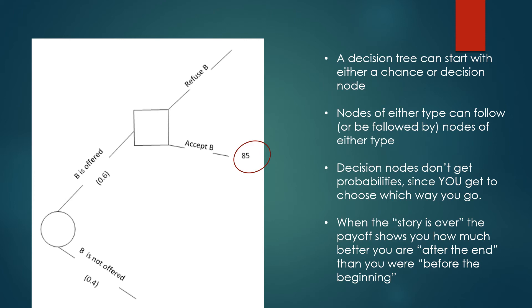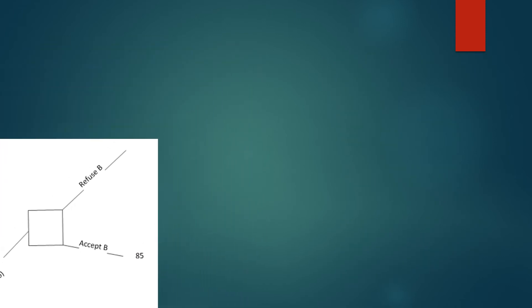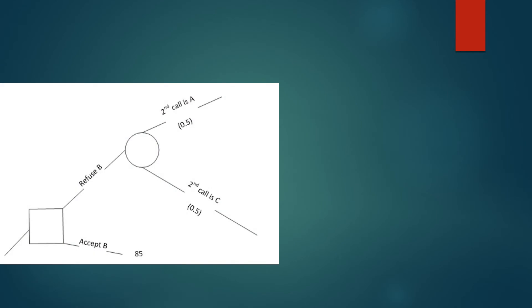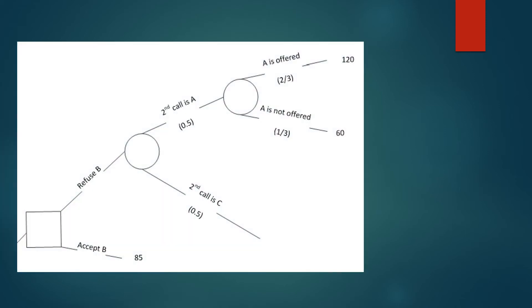Alright, we have the other branch still to worry about. What happens if B is offered to him but he refuses to take it. So what happens next? Well he's going to have to sit around and wait for another call to come in, and what we have to know is who's going to make that call. It could be A, it could be C. They're equally likely so both have probabilities of 0.5. Let's work on the upper branch, even though both the upper and lower are about equally difficult. There's no reason to do one before the other. So our history so far is a call came in from B, they made him an offer, but Shawn refused that offer, and the second call that came in was from A. What happens next? Well that's pretty simple. It's a chance node. Either A is going to offer a job or they're not. So we have two possibilities with two branches, but things are a little more complicated here than you might think. Take a look here for example.